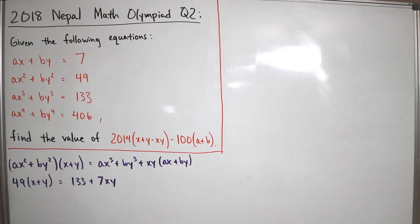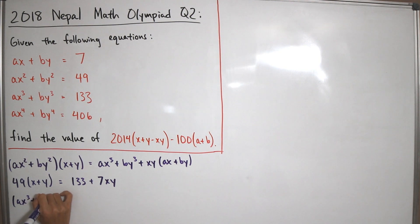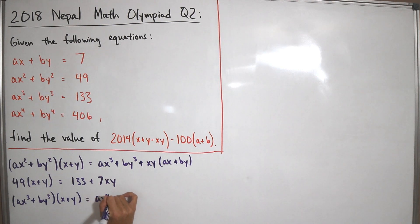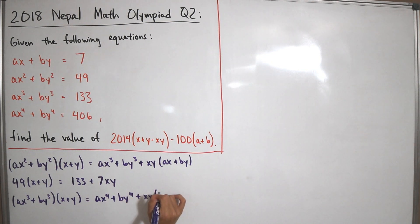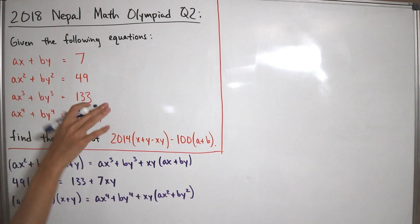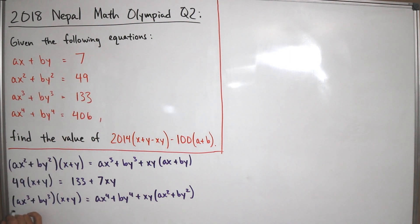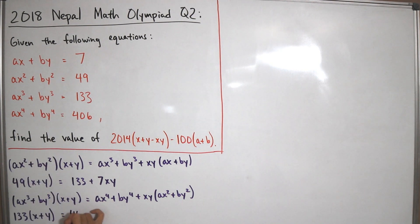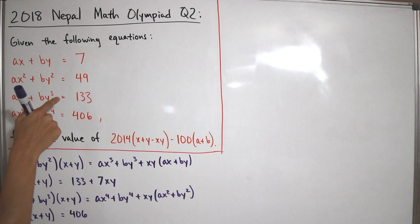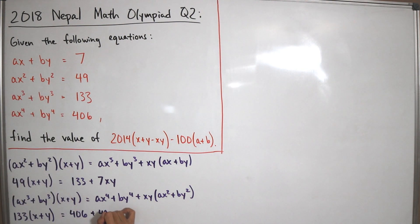Next, take ax³ + by³ and multiply by (x + y). Simplifying gives ax⁴ + by⁴ plus xy times (ax² + by²). Substituting known values: ax³ + by³ = 133, ax⁴ + by⁴ = 406, and ax² + by² = 49. This yields our second equation: 133(x + y) = 406 + 49xy.